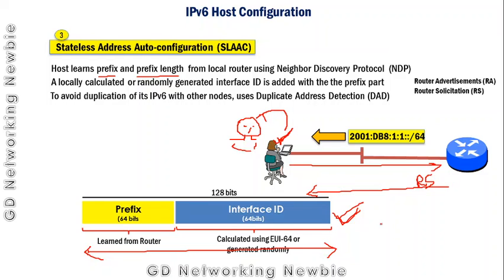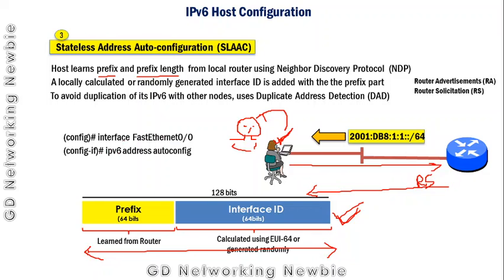To configure a router interface to obtain its IPv6 address using the SLAAC method, navigate to that particular interface and use the command 'IPv6 address autoconfig'. This will initiate the SLAAC process: the interface gets the first 64 bits from the router, then calculates or randomly generates the remaining 64 bits, and finally has a complete IPv6 address. These three methods — static, stateful DHCP, and stateless address auto configuration — are the ways we can assign IPv6 addresses to client machines.